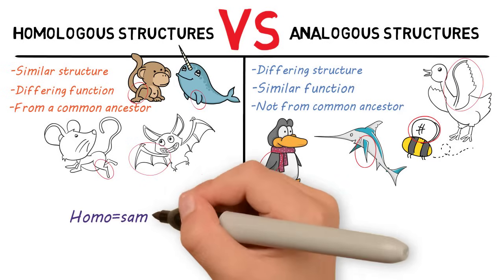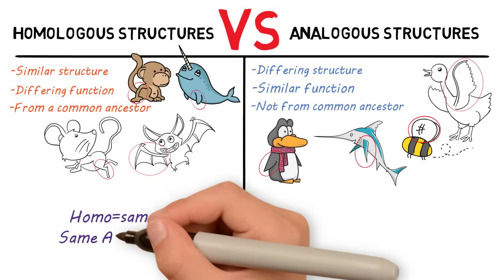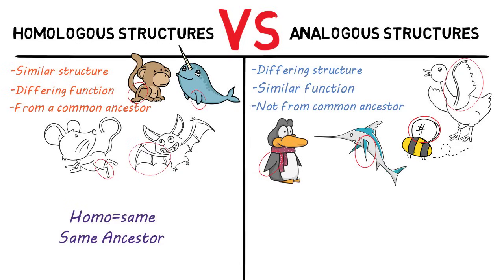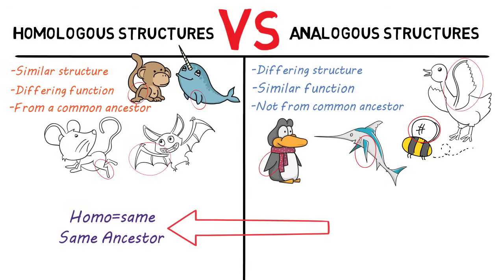To remember homologous structures, think that 'homo' means same, so they're from the same ancestor. If you remember that, then you'll always know that the analogous structure is the other one.